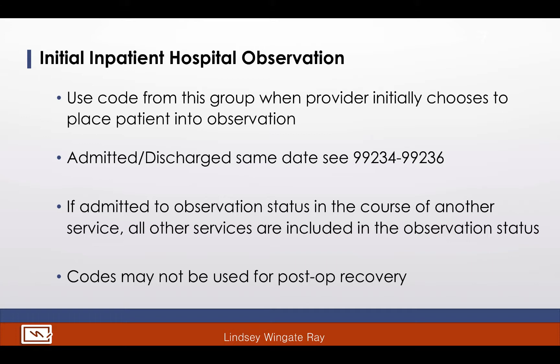The second paragraph gives us a couple of situations to consider. The guidelines tell us when the patient is admitted to the hospital after being in observation care status on the same date, to look at the notes for the initial hospital care. The guidelines also tell us if the patient is admitted and discharged on the same date, to look at codes 99234 to 99236. The guidelines throughout the E&M chapter assist us in determining whether we have selected the correct group of codes.